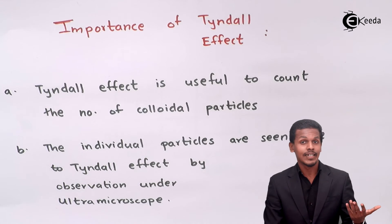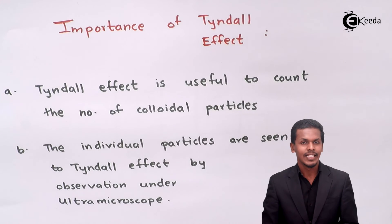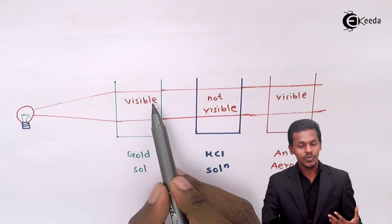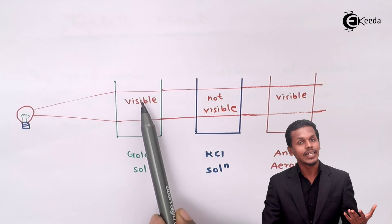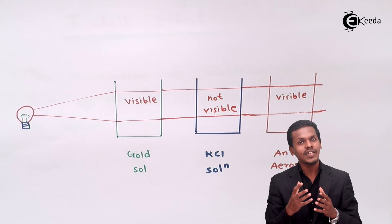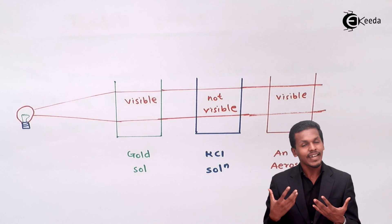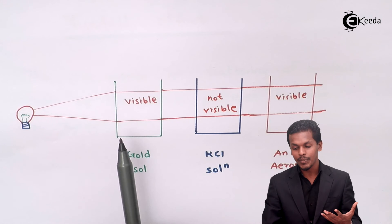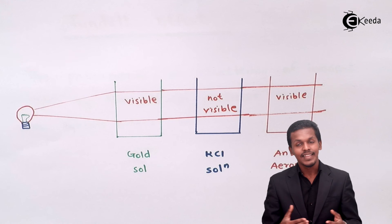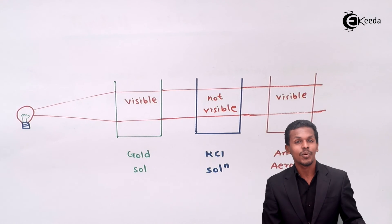Now let us move on to the importance of the Tyndall effect. The first importance is that the Tyndall effect is useful to count the number of colloidal particles. When the beam of light passes through gold sol, the particles are responsible for scattering of light, and by this we can identify and count the number of particles present that are responsible for the scattering.